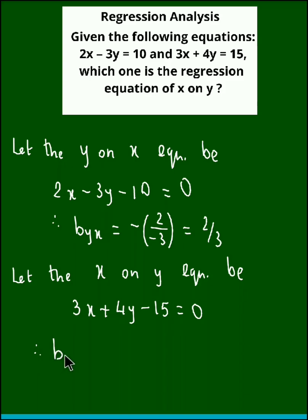Therefore b_xy is minus of b by a, that is coefficient of y upon coefficient of x. So that's minus 4 by 3, which equals minus 4 by 3.